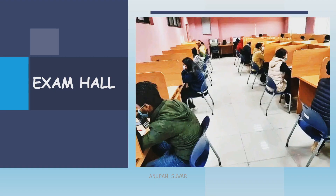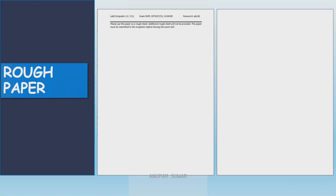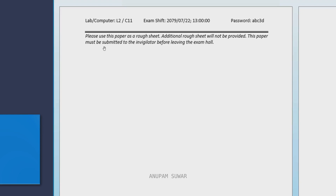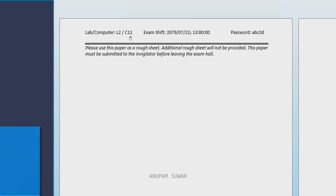You go to the exam hall where there are students seated. There is a gap or partition between students to prevent cheating. In the exam hall, there is a table with a paper — front or back side — containing your lab computer number, exam shift, password, username, and roll number.